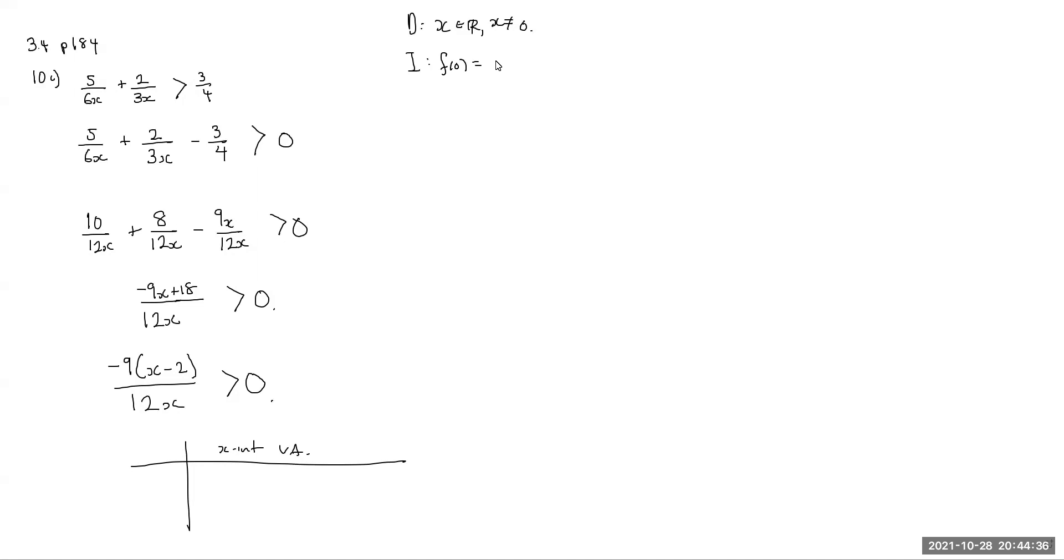f of x is 0. That means I get, oh, you can't because x cannot be a 0. So in other words, there is no y-intercept. Great for us. In terms of x-intercepts, when is f of x equal to 0? Well, it's equal to 0 when negative 9x minus 2 equals a 0. Therefore, that means x has to be a 2. My x-intercept is just 2, 0.